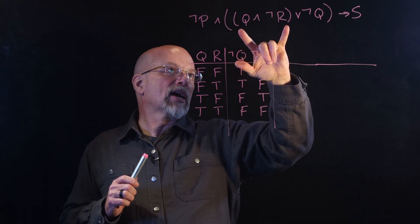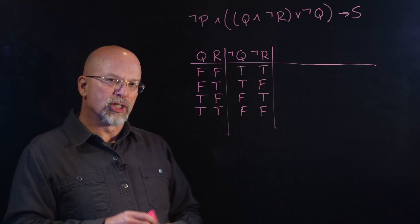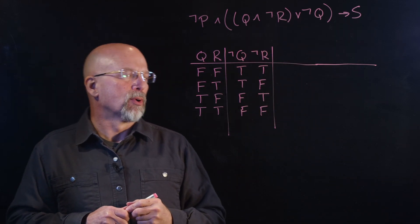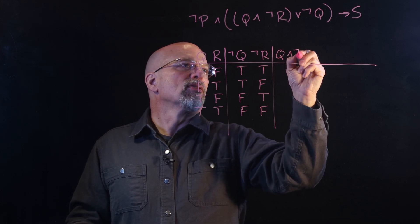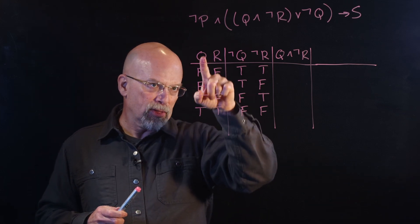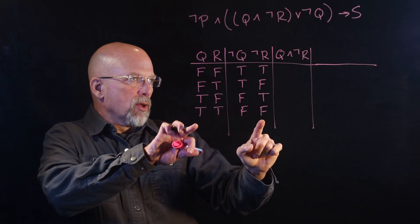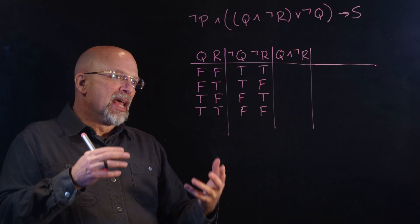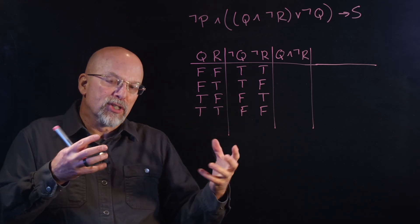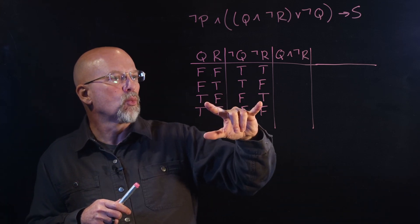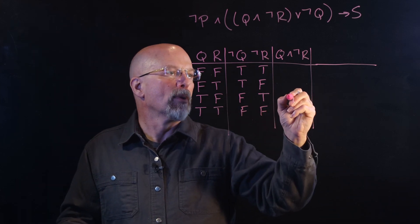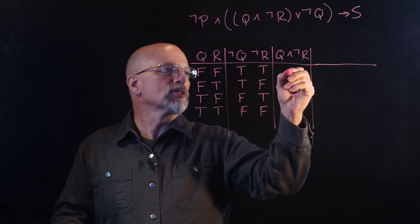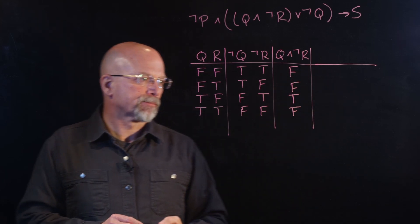We've got an order of operations here — we do what's inside the parentheses first before we can do anything outside. So we're going to compute Q ∧ ¬R. The AND says that the only way the conjunction outputs true is if all of the propositions being ANDed together are true. That only occurs for the third row, where both Q and ¬R are true. Everywhere else there's at least one false proposition, so we've got all falses.